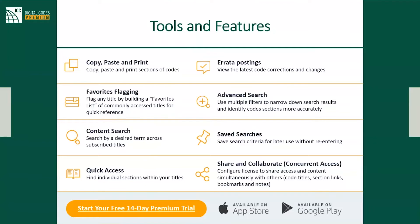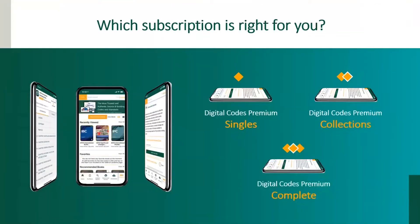There are apps available in both the App Store and Android versions. Digital codes premium — DCP — covers all the features we're going over today. Whether you're getting singles, where you choose just single titles, or collections — mainly specific state collections — we really recommend the Digital Codes Premium Complete, which includes everything on our platform: all the ICC codes, commentary, study guides, and all the standards and other titles available.